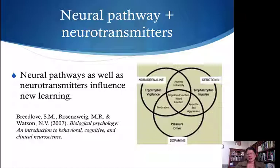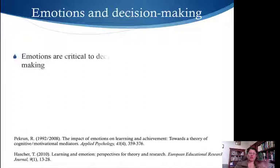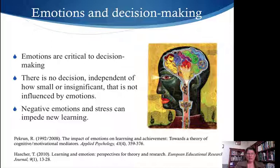As you saw in the previous presentation, there's a lot connected with stress hormones — stress hormones will impede the ability to make connections in the brain. While there would be a normal link between information that creates synapses for new learning, kids under high stress situations have certain neurotransmitters impeding others from doing their job, so those connections won't form. Both neural pathways and neurotransmitters play a role in the function of emotions in the brain. Emotions are critical to decision-making — there is no decision, however small, that is not influenced by emotions. Negative emotions and stress especially can impede new learning.